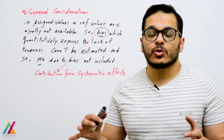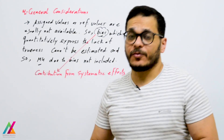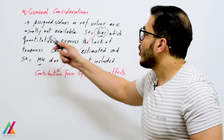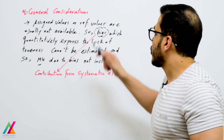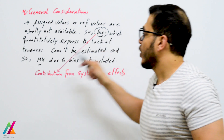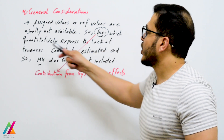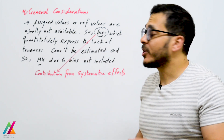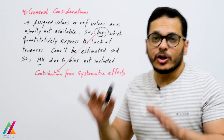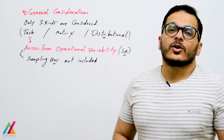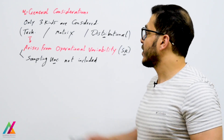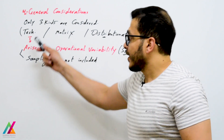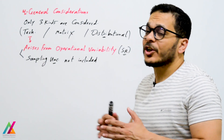Some general considerations: assigned values or reference values are usually not available in microbiological analysis, so bias — the contribution from systematic effects that quantitatively expresses the lack of trueness — cannot be estimated. Therefore, measurement uncertainty due to bias is not included in this standard. Only three kinds of uncertainty are considered: technical uncertainty, matrix uncertainty, and distributional uncertainty.